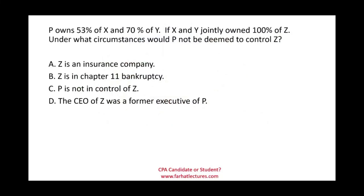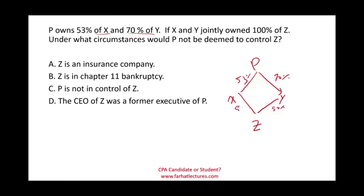Let's look at a multiple choice question. P owns 53% of X and 70% of Y. X and Y jointly own 100% of Z. P controls X (53% > 50%) and controls Y (70% > 50%), and X and Y control Z — therefore P controls Z. Under what circumstances would P not be deemed in control of Z?